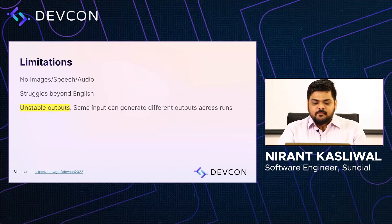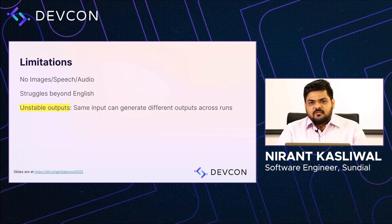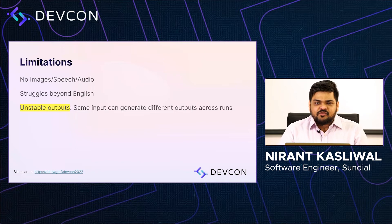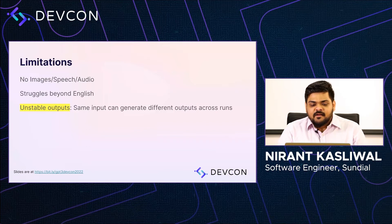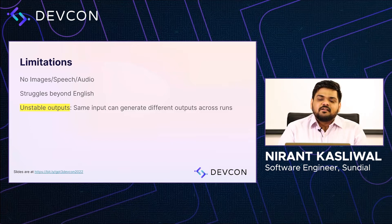GPT-3 does not handle image, speech, or audio directly — though you can convert speech to text first and then work with it. Since the training sample is mostly based on the American English internet, like Wikipedia, it struggles beyond English. It can handle a bunch of English dialects ranging from Indian to British, but anything beyond English it will really struggle with, and non-European languages like Hindi, Marathi, or Kannada will perform much worse.